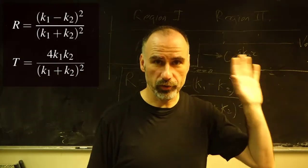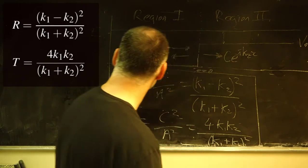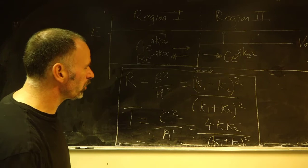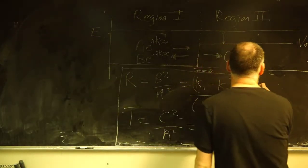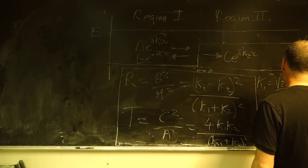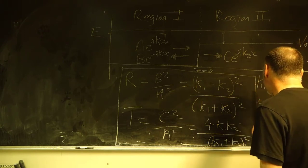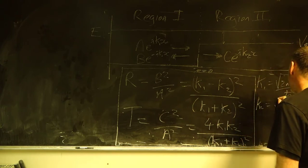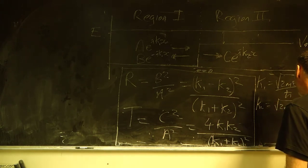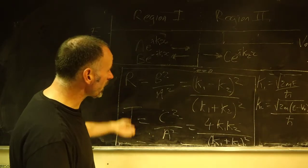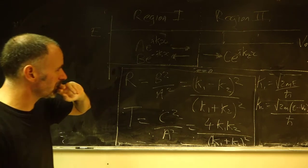In terms of reflection and transmission coefficients: R = ((k₁−k₂)/(k₁+k₂))², and T = 4k₁k₂/(k₁+k₂)². First of all, we've got a finite reflection, which we wouldn't have in the classical case.